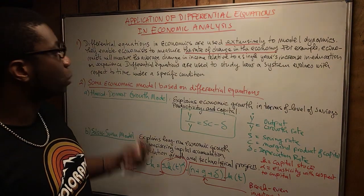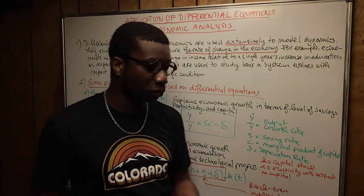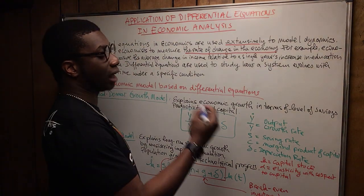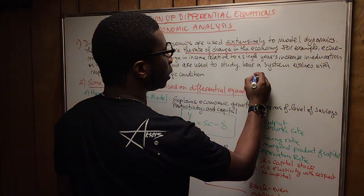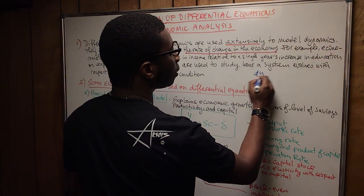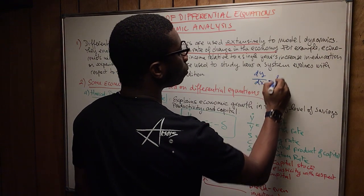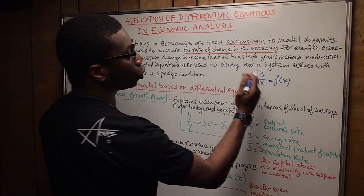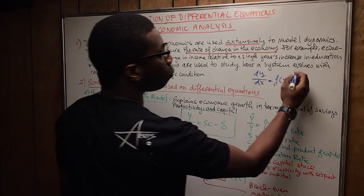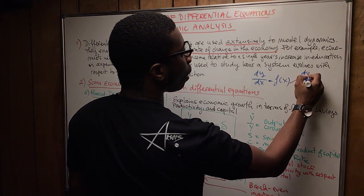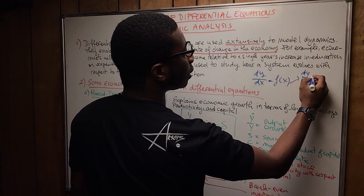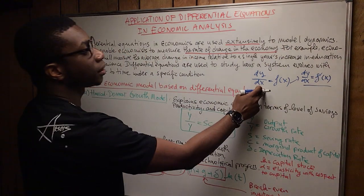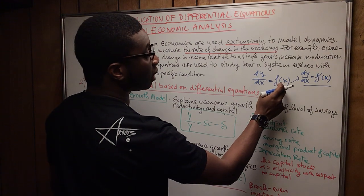Basically, differential equations are used to study how a system evolves with respect to time. The typical formula of a differential equation — a very simple one — is dy over dx equals f(x). This is different because normally the derivative would be dy over dx equals f prime of x, but here dy over dx equals f(x).